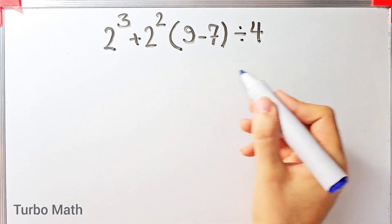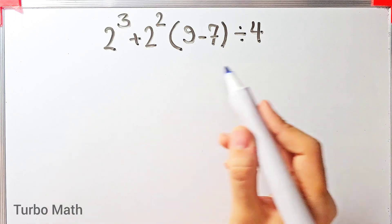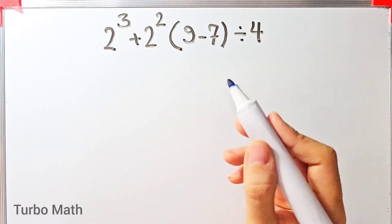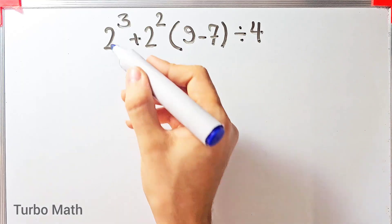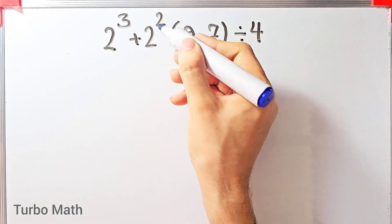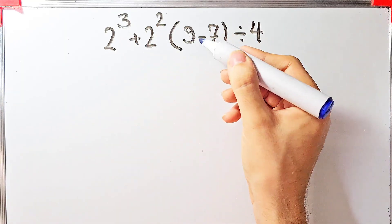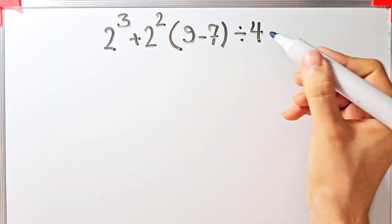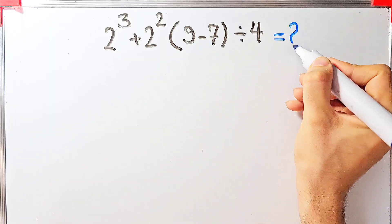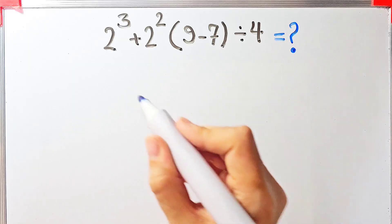Hi friends, welcome to Turbo Mass channel. A lot of people when they see this question don't know which operation to do first, so they often make a mistake. The question is: 2 to the power of 3, plus 2 to the power of 2, times (9 minus 7), divided by 4. What is the answer?